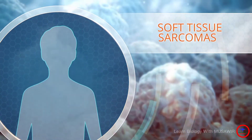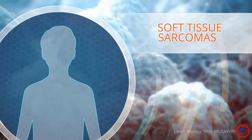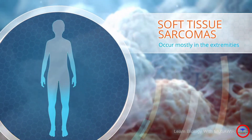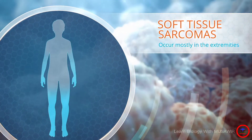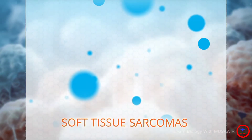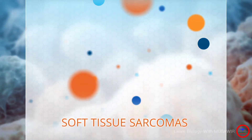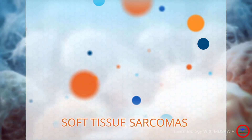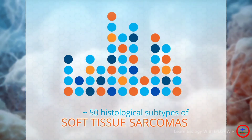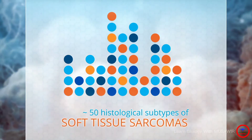Soft tissue sarcomas can occur anywhere in the body but the majority occur in the extremities. Soft tissue sarcomas are a heterogeneous group of cancers with approximately 50 different histological subtypes.